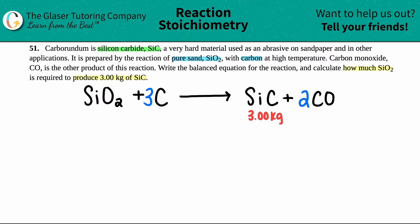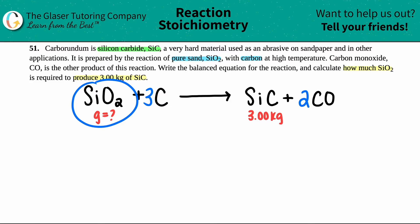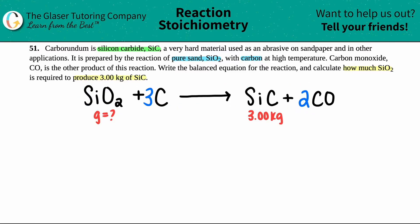They didn't specify a unit, but I'm going to assume they want mass in grams. They gave us three kilograms, so we'll probably have to convert back to kilograms at the end. This is a great setup: when you're given information for one compound and asked for information on another, and those two compounds are linked by a balanced equation — we're doing stoichiometry. Stoichiometry is just a fancy way of saying going from one compound to another using ratios and a balanced equation.